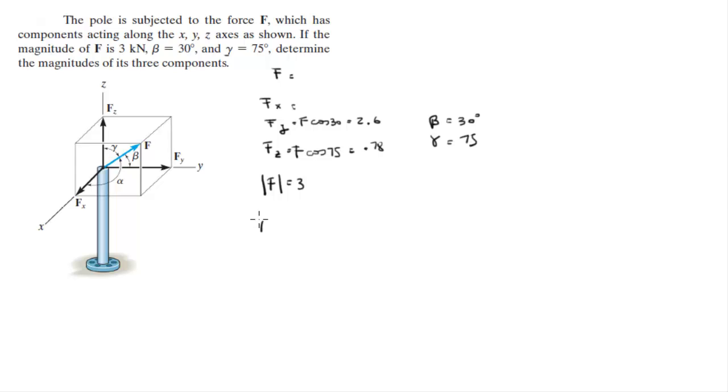You know that the magnitude squared is equal to F of x squared plus F of y squared plus F of z squared. You already got the y, you already got the z, and you already got the magnitude. This is the one we're looking for, one equation, one variable. Just apply the numbers in.